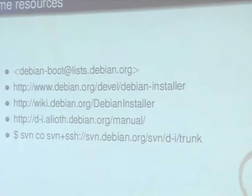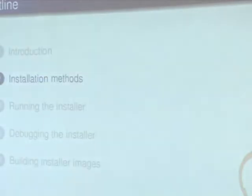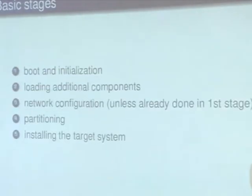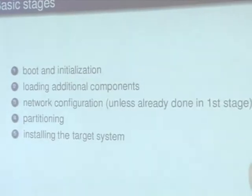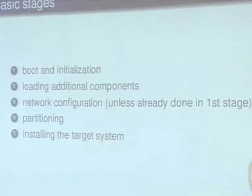And if you want to do anything with the installer, you need an SVN checkout. So what installation methods do we have, and how are they composed, and how do they differ?